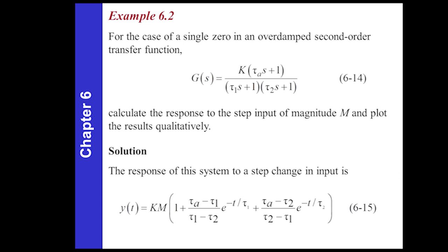Here's an example. There's a solution with very detailed instructions in the textbook. This is a very simple example with two poles and then one zero. The poles are going to be at negative one over tau two and negative one over tau one, and the zero is going to be at negative one over tau a. You get the poles and zeros by setting the denominator equal to zero — the characteristic equation — and then the polynomial in the numerator equal to zero, and solve for the roots.